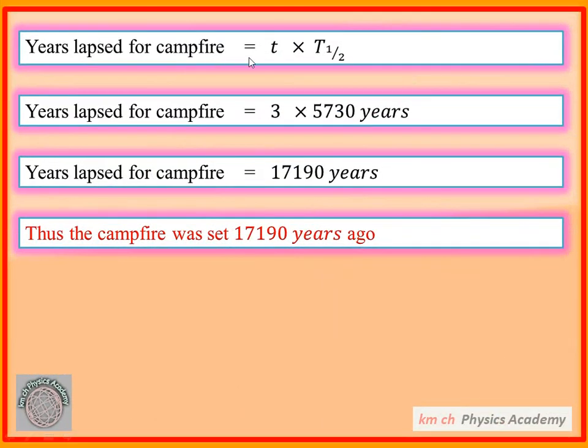Toh years lapsed is equal to T₁/₂. Is ki jagah pe 3 aa jayega aur is ki jagah pe 5,730 years aa jayenge. Toh jab yeh multiply ho jayenge toh 17,190 years ban jate hain. Is ka matlab yeh hai ke is ghar mein jab kisi ne camp lagaya tha toh us ko satara hazar ek sau nave saal guzar chuke hain.